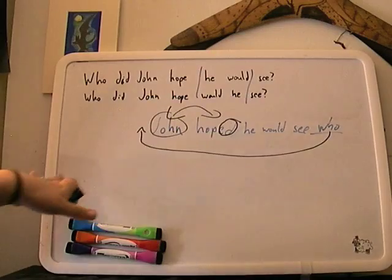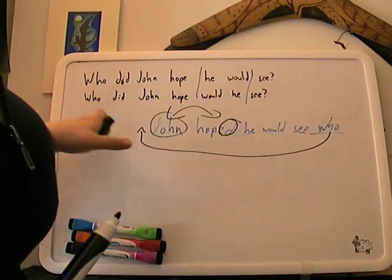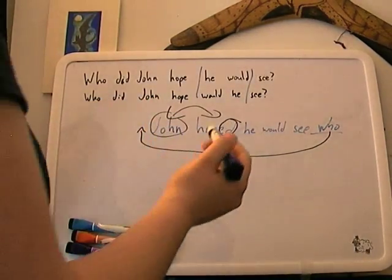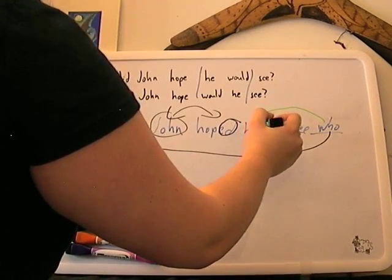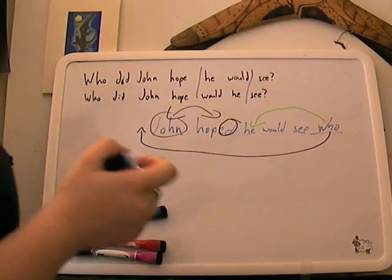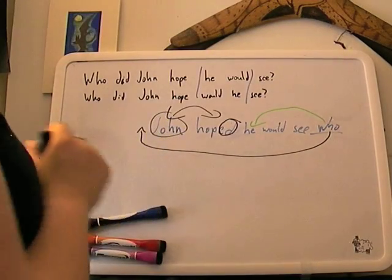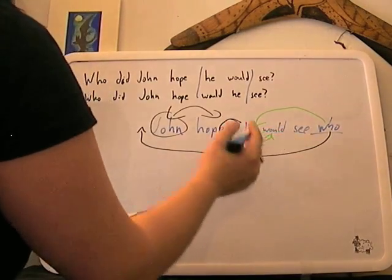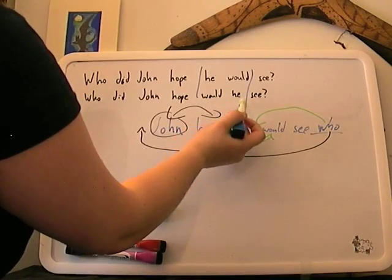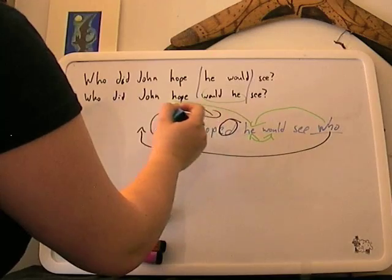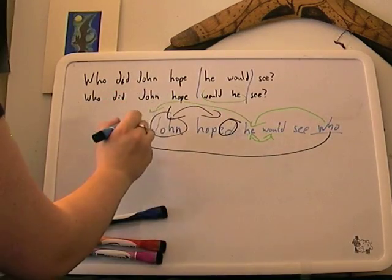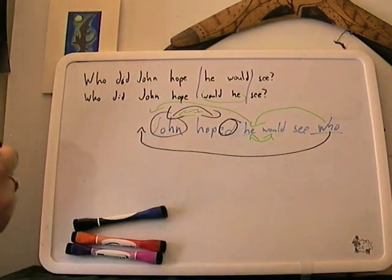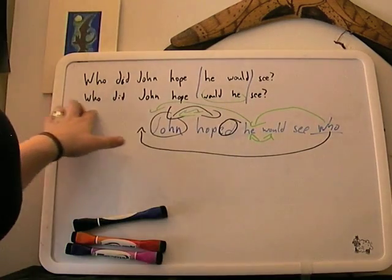They're going to switch and form 'Who did John hope.' All that proves is that this WH triggers an inversion. What the Belfast one proves is that 'Who' stops somewhere in here, causes these two to invert — giving you the 'Would He' that you see here — and then moves again to the next position, and again causes these two to invert, giving you the Belfast example.